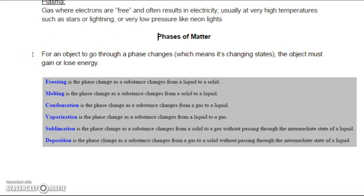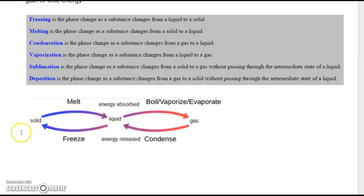So let's add to our notes the phases of matter. For an object to go through a phase change, which means it's changing state, so we're changing from solid to liquid to gas, the object must gain or lose energy. And here are our phases of matter: freezing, melting, condensing, vaporizing, sublimation, and deposition. And you can write down the definitions like this, or you can put down this next picture, which still shows that solid to liquid is melting. Liquid to gas is boiling, vaporizing, evaporating. We're going to talk more about the differences between these coming up. But for now, liquid to gas, make sure you know that. Gas to liquid is condensing. And liquid to solid is freezing. Those are the ones that I really want you to know.